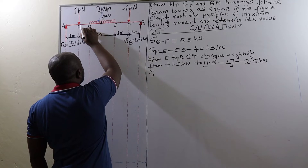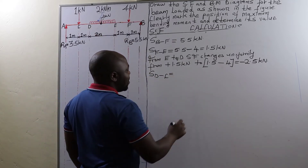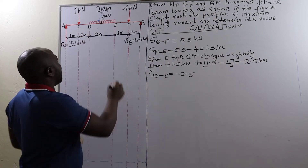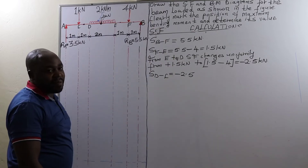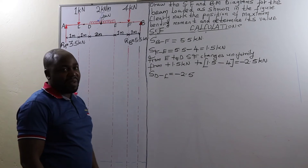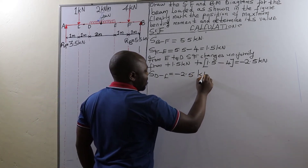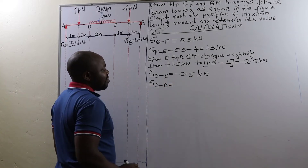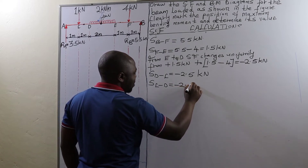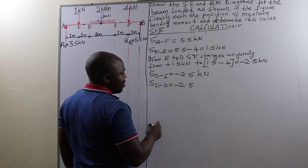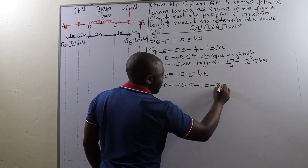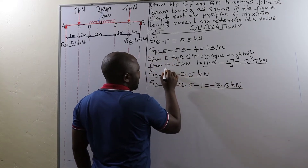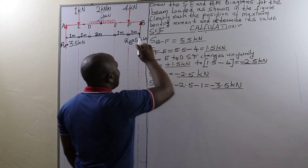We go to shear force between point D and point C. Shear force between D and C is going to be negative 2.5 kilonewtons, since we don't have any other load between point D and point C. When you consider a point here and check on the right-hand side, the sum of all forces will be negative 2.5 kilonewtons. Finally, the shear force between C and A is going to be negative 2.5 kilonewtons minus the 1 kilonewton point load at point C, giving us negative 3.5 kilonewtons.